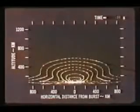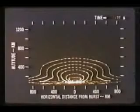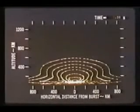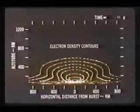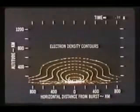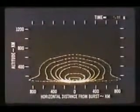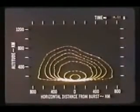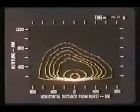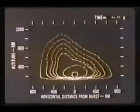In addition to examining the changes in mass density of the atmosphere, this computer program is also capable of predicting changes in electron density and modification to the Earth's magnetic field. Here, we are watching contours of constant electron density for the same explosion, which mark regions of radar signal interference.